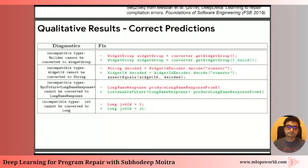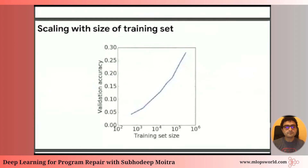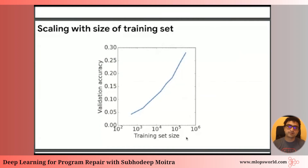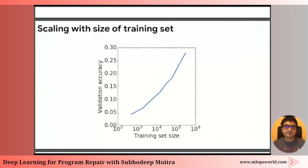It's encouraging that performance keeps going up with more training data. On the y-axis is validation accuracy, and on the x-axis is the size of the training dataset. The performance isn't plateauing anytime soon, which is encouraging: as we harvest more data and have more databases to mine, we can keep getting more performance out of our model.